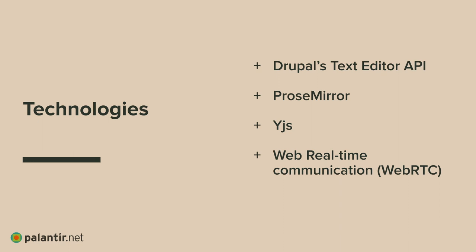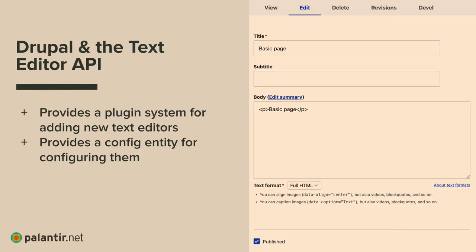We'll go over some of the technologies we've used to develop EditTogether. We've used the Drupal Text Editor API, which allows us to attach a text editor to Drupal. Then we've also used ProseMirror, YJS, and WebRTC — Web Real-Time Communication. With just the Drupal Text Editor API, you get a title field, subtitle field, and a body field which is a formatted text field but does not have any editor attached — you just get a textarea element in Drupal. What the editor API does is provide a plugin system for attaching text editors, and also provides a config entity for configuring them. That config entity is what eventually becomes the text formats you see in Drupal, like basic HTML, restricted HTML, full HTML, and things like that.